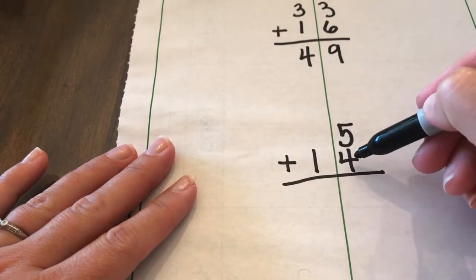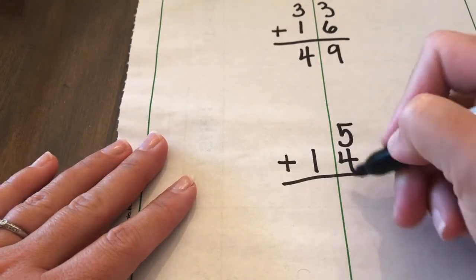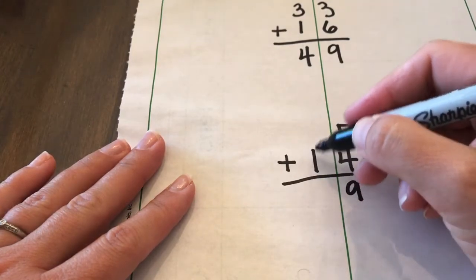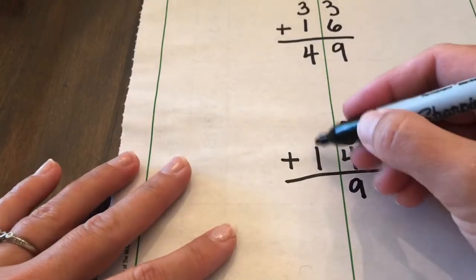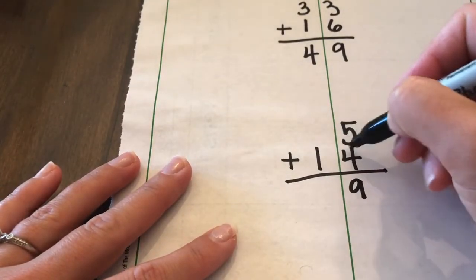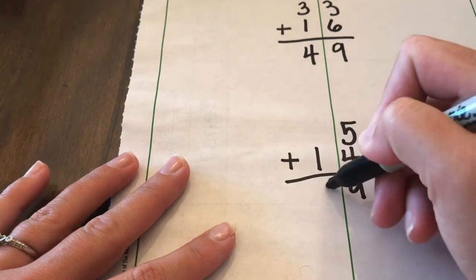You're going to add up the ones first, always, always the ones first. 5 plus 4 is 9, and then 1, we just have a 1 over here. That's 1 ten. We're not adding anything else to it because the number 5 doesn't have any tens, so there's no number right here. So it's just 1.